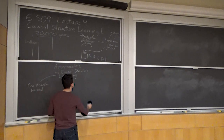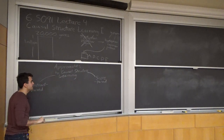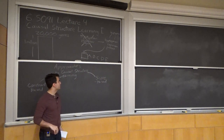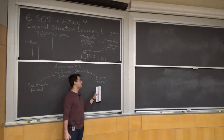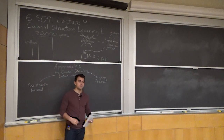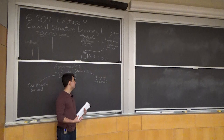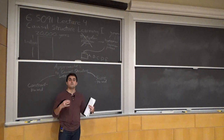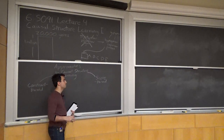Score-based methods assign to each possible causal model a different score; a higher score means the model fits the data better. Typically these are penalized maximum likelihood scores: the maximum likelihood part prioritizes that the graph actually fits the data, and penalization means smaller graphs are preferred. If a graph with fewer edges and one with more edges fit the data equally well, you prefer the one with fewer edges.